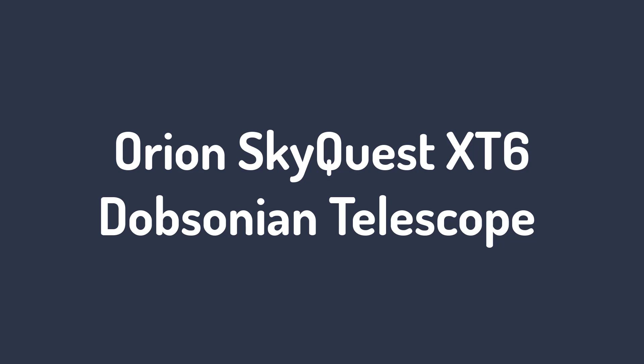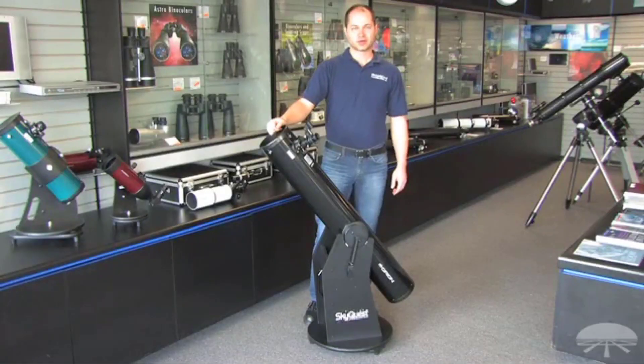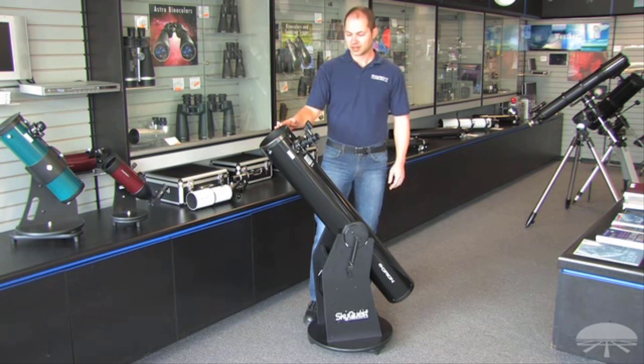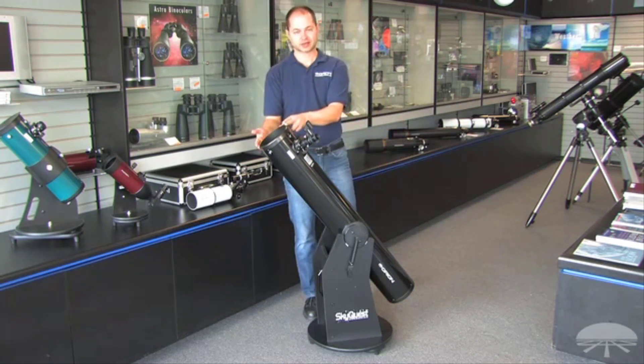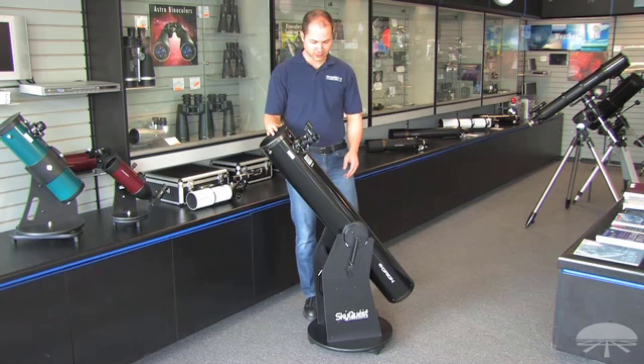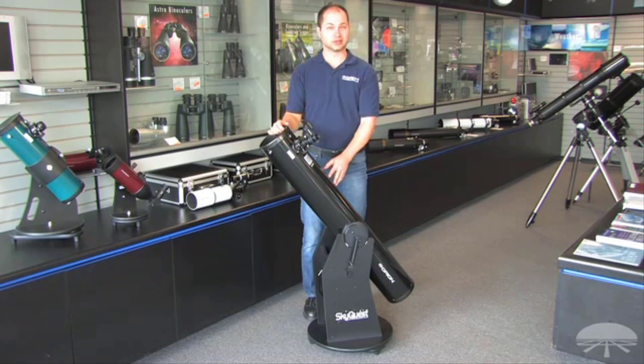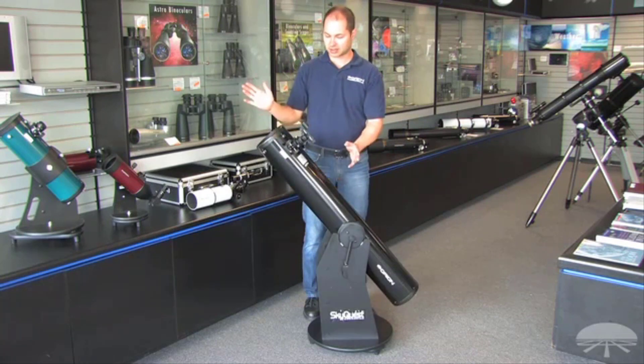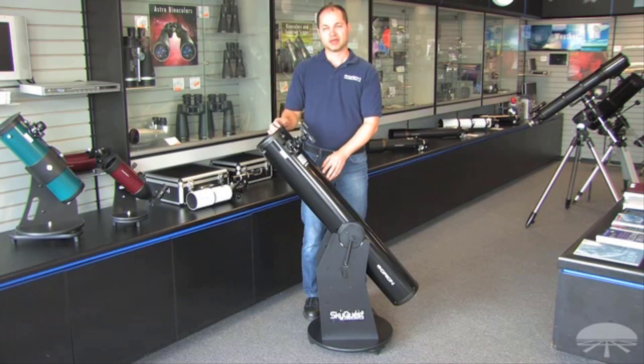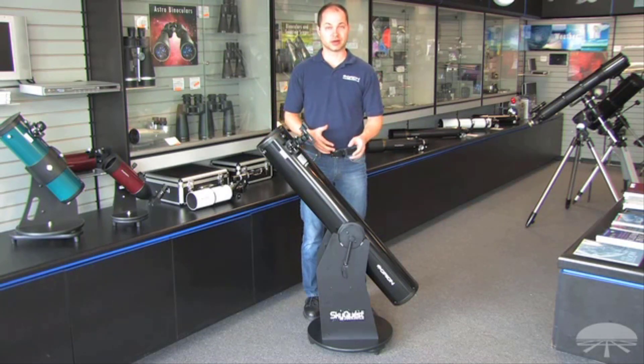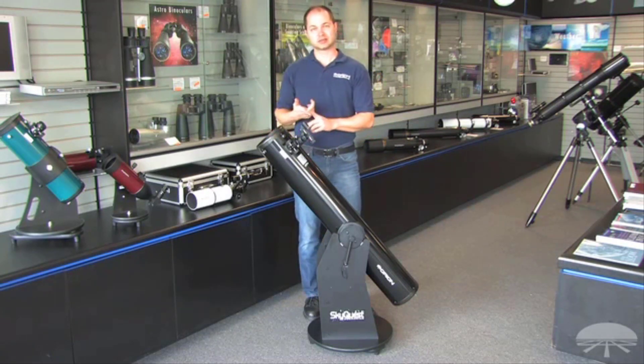Number two: Orion SkyQuest XT6 Dobsonian Telescope. The Orion 8944 SkyQuest XT6 Classic Dobsonian Telescope features a 6-inch aperture and an f/8 parabolic mirror for great views of the moon and planets. It comes completely aligned so you don't need to worry about polar alignment and it is simple to navigate. This telescope is attached to a stable Dobsonian base to ensure that you get the clearest image without any vibration and is effortless to move around when tracking objects.